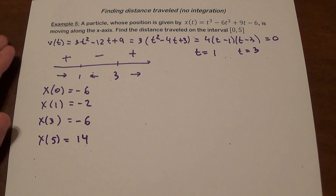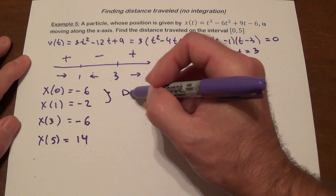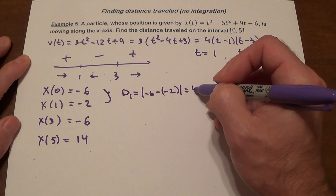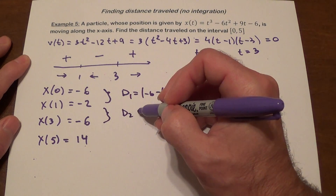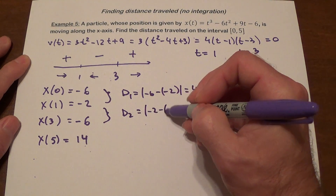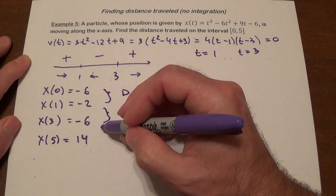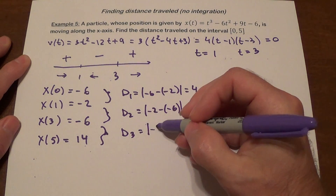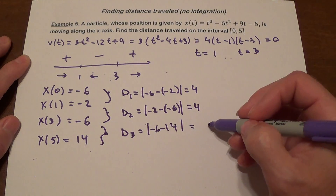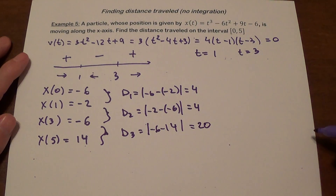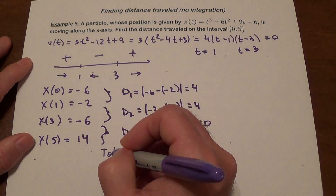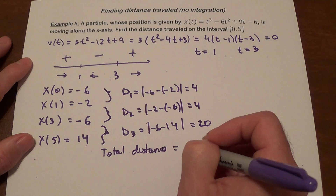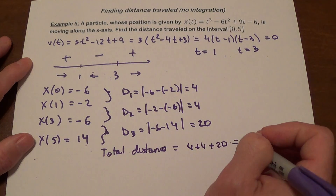We calculate each segment's distance: d1 = |-6 - (-2)| = 4; d2 = |-2 - (-6)| = 4; and d3 = |-6 - 14| = 20. The total distance traveled is 4 + 4 + 20 = 28.